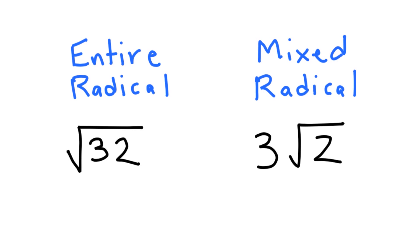In this video we're going to talk about entire radicals and mixed radicals and how to go from one to the other and vice versa. An entire radical is where the entire number is underneath the root sign. For example, the square root of 32 — we can see 32 is completely under the root sign, with nothing else multiplied by it.